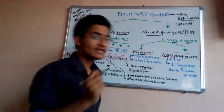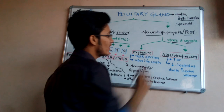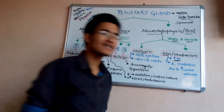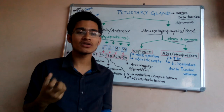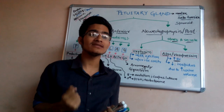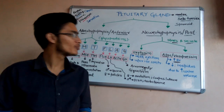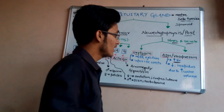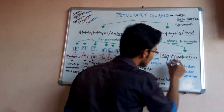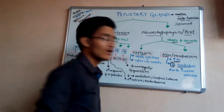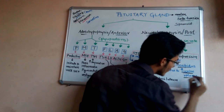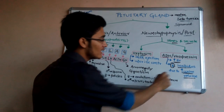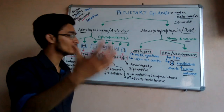The second hormone is ADH, the anti-diuretic hormone, also known as vasopressin. Its function is to increase blood volume by increasing reabsorption of water from the distal convoluted tubule (DCT) of Henle's loop. When ADH concentration decreases, it causes diabetes insipidus, which is due to an increase in urine volume.